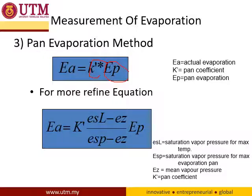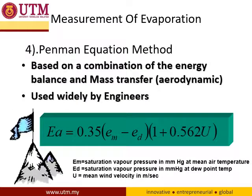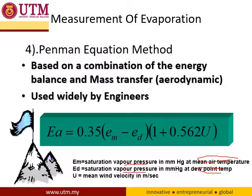For modifying the equation, we may also use the value of vapor pressure, which is a meteorological parameter. There are ways to estimate vapor pressure. If we don't have the equipment, we can still measure evaporation using the Penman equation method, but we still need some parameters. These may be estimated from temperature — from a thermometer, we can get mean air temperature and dewpoint temperature — and we also need wind velocity. The Penman equation method is based on a combination of the energy balance and mass transfer, and it is widely used by engineers.